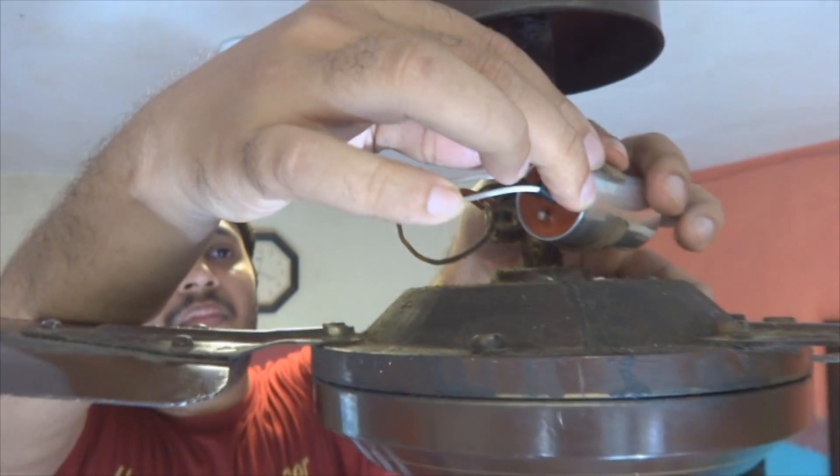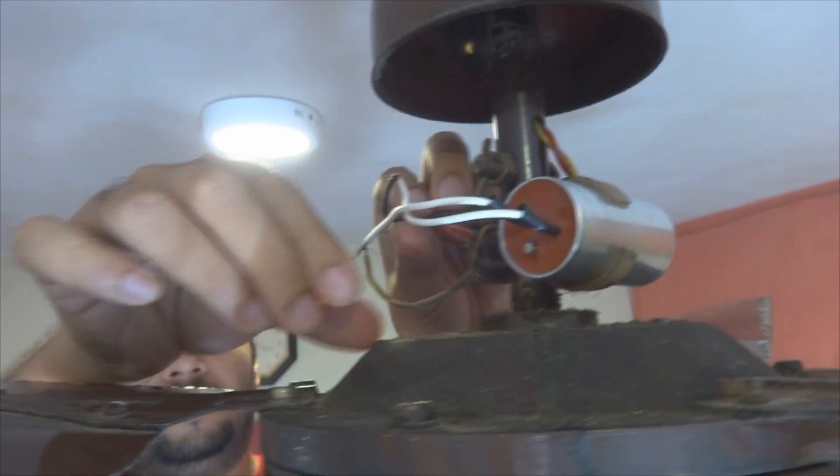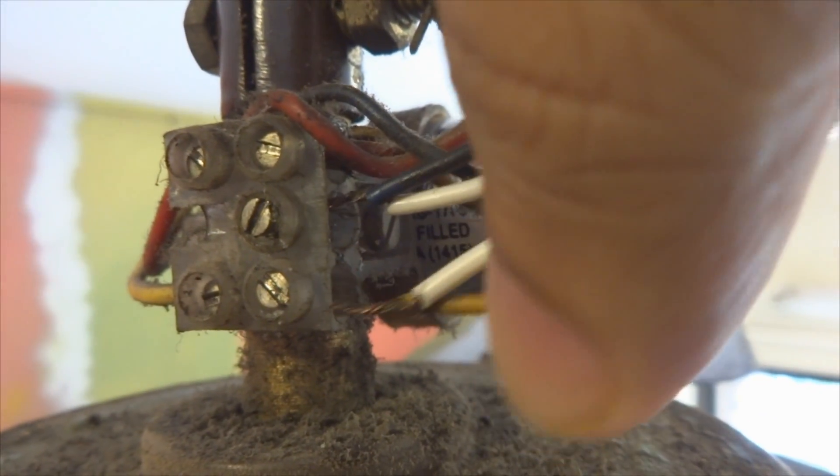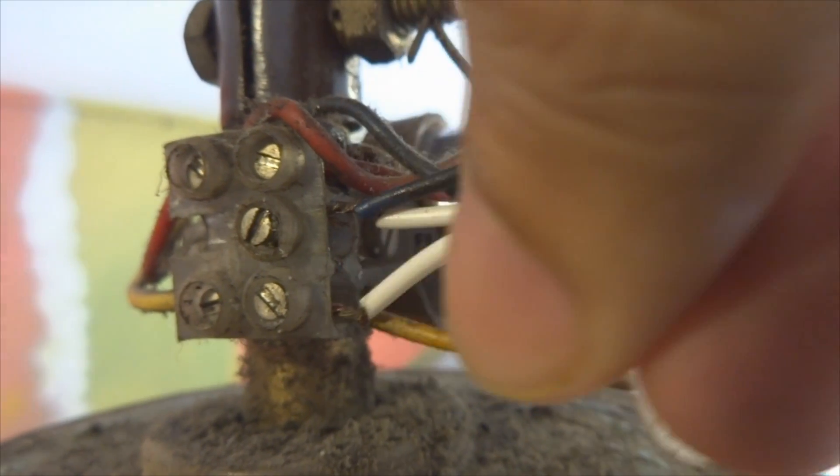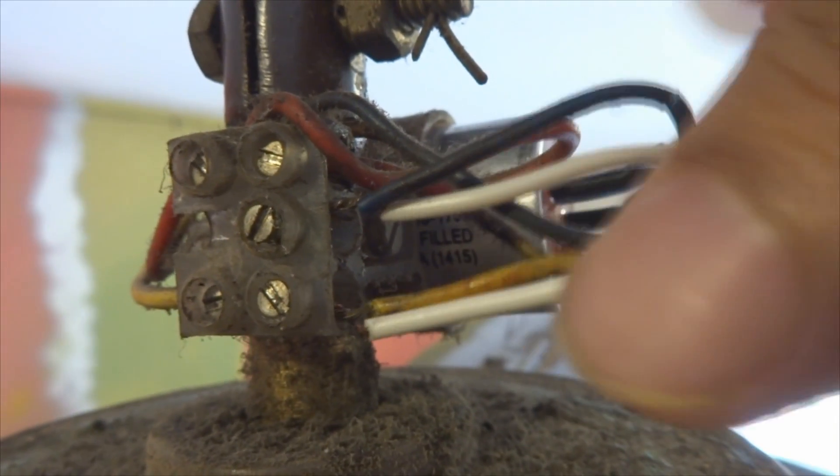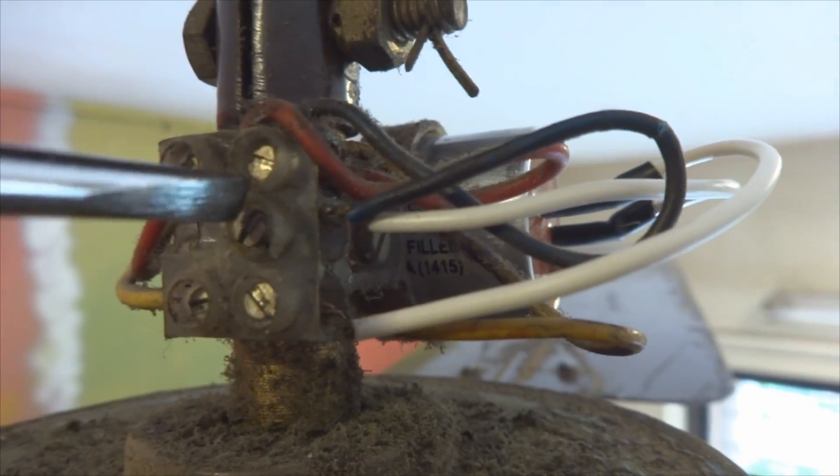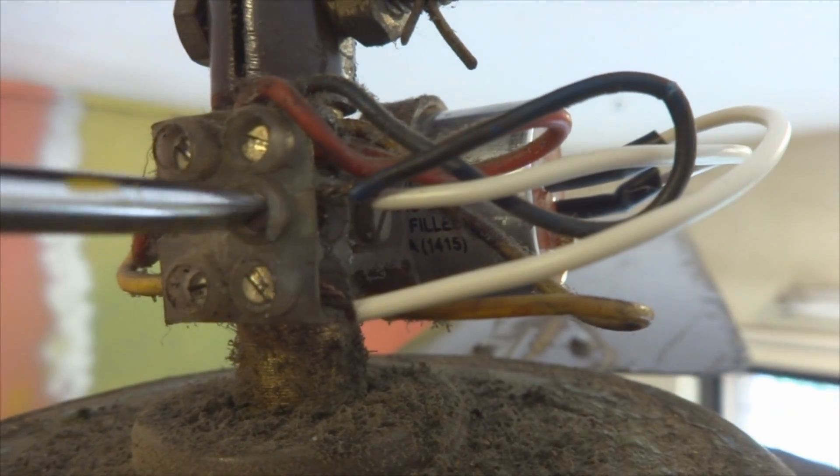And now I'm connecting the second wire which will go into the neutral point. Once I've connected both the wires, I'll have to screw them in their respective points and in place. So there you see in the middle point, I've connected the wire which connects the starting winding and the capacitor. And in the last point, I've connected the fan's neutral wire with the capacitor. And this completes the circuit.